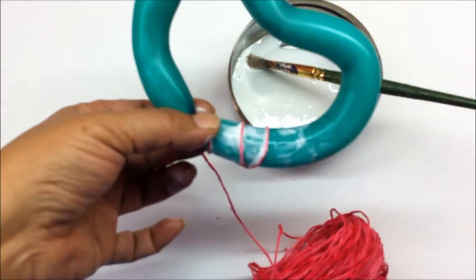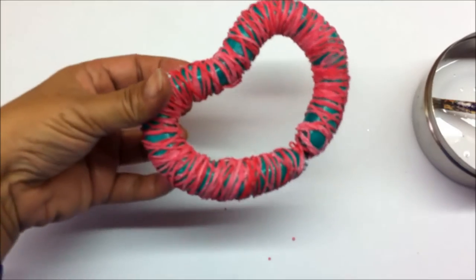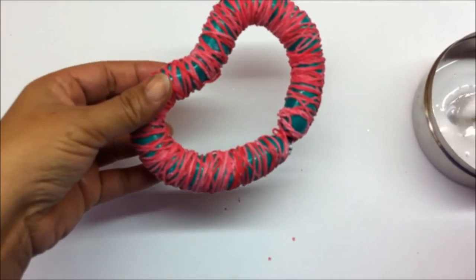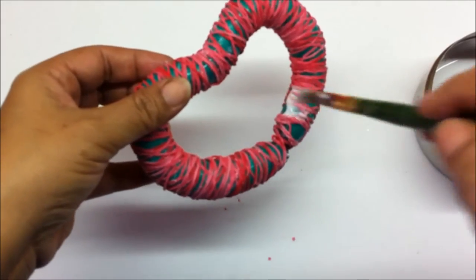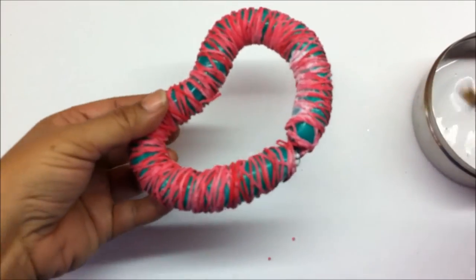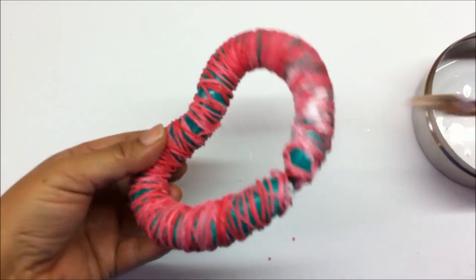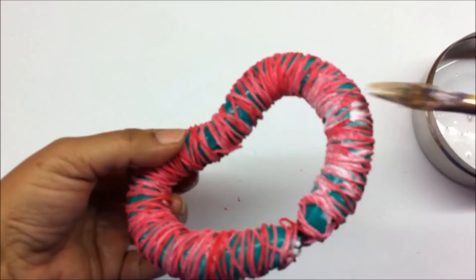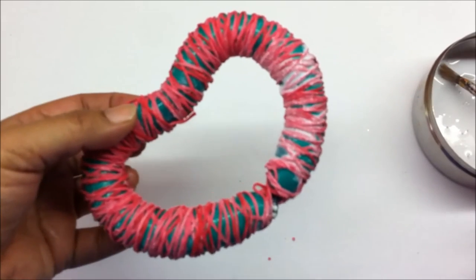After covering it with thread like this, give a final coat of glue so as to make it firm, and then let it out to dry. Just cover it well with glue so that all the threads stick together, and then keep it out to dry.